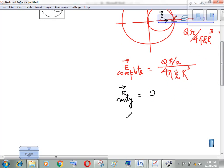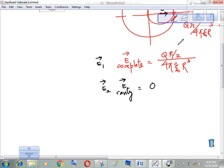Ab hame kya karna padega, agar main isko E1 maan raha ho, aur isko E2 maan raha ho. Theory hamne seekhi thi ki cavity banane ke baad, agar field nikalni ho ga is point pe, to hum isme se isko vector form me minus karenge. Yeh to zero hai.